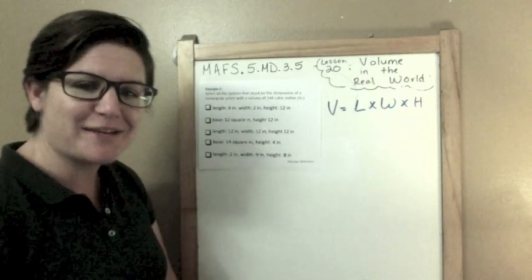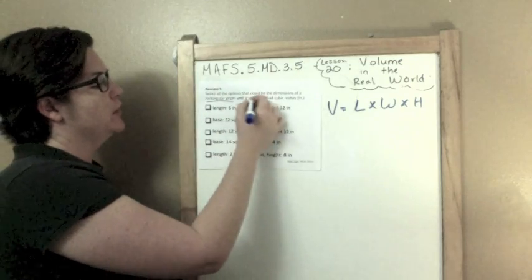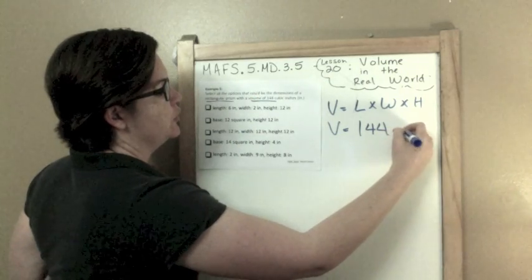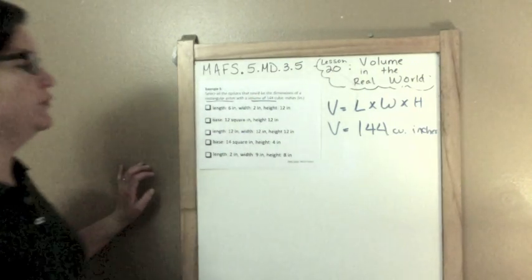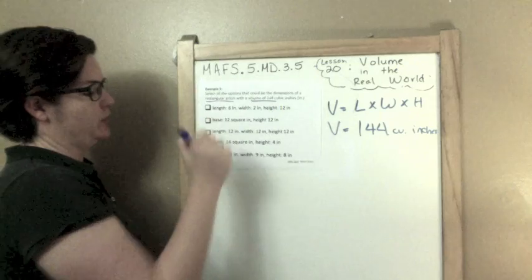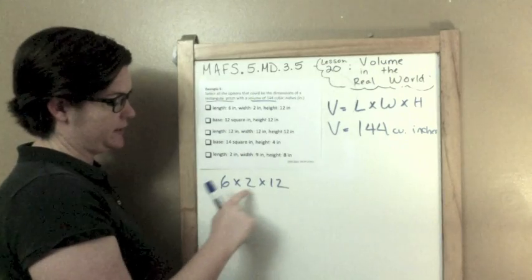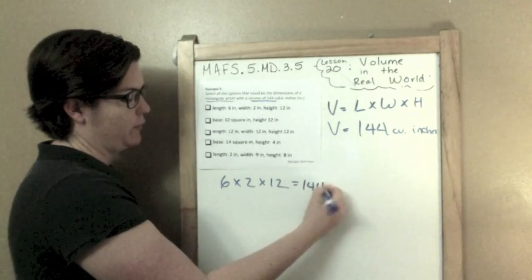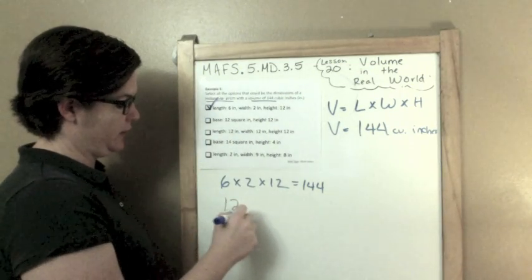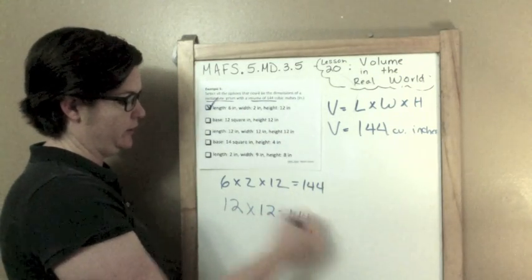Example 5. Select all the options that could be the dimensions of a rectangular prism with a volume of 144. So, 144 cubic inches is what we're looking for. So, we're going to go through each one of these, solve them out, and see if we get 144. So, we've got a length of 6, a width of 2, a height of 12. 6 times 2 is 12, 12 times 12 equals 144. Yes. We've got a base, which is the length times the width of 12, and we've got a height of 12. Yes.